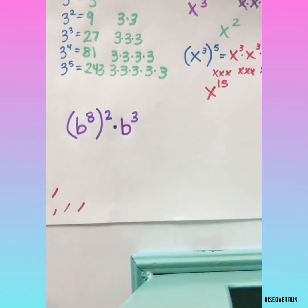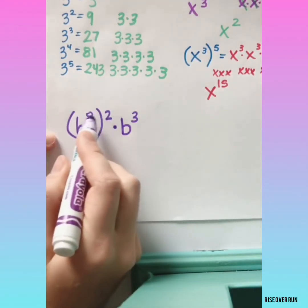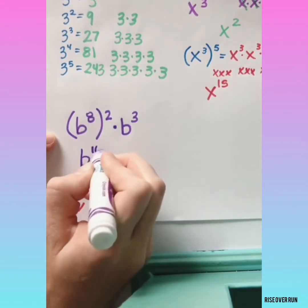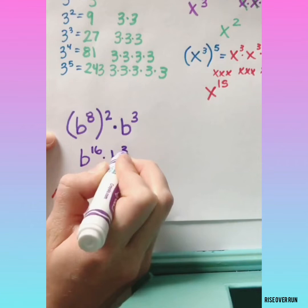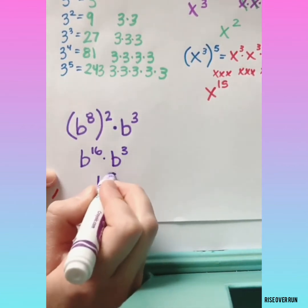Let's try simplifying some expressions that combine several rules. Here we have power rules, so we'll need to multiply 8 times 2. Now we just have product rule, so we'll add 16 and 3.